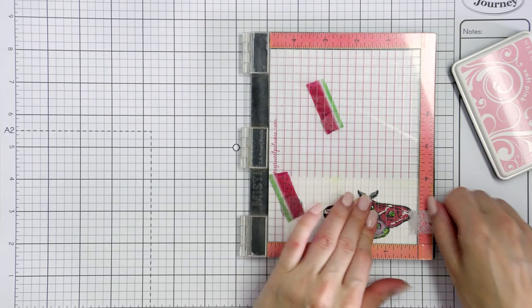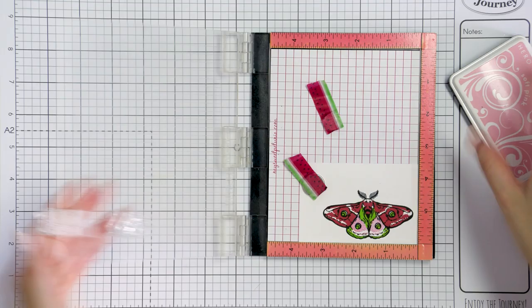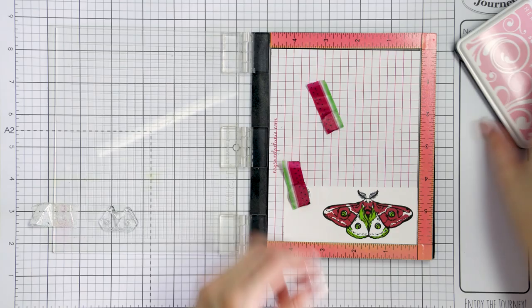There is a coordinating die available for the moth stamp set so I used mine to die cut all of these images out in my die cutting machine. This gave me beautiful images with a white outline to them.